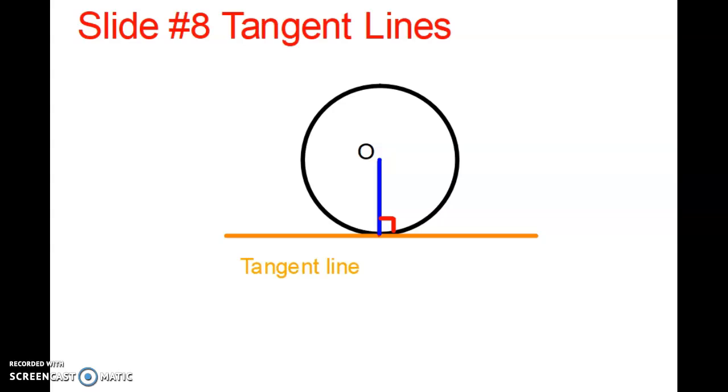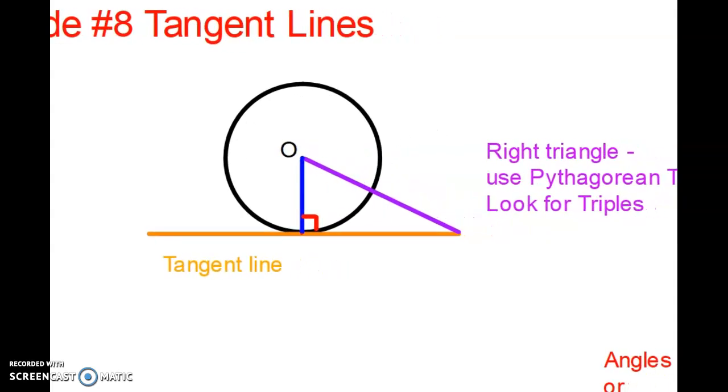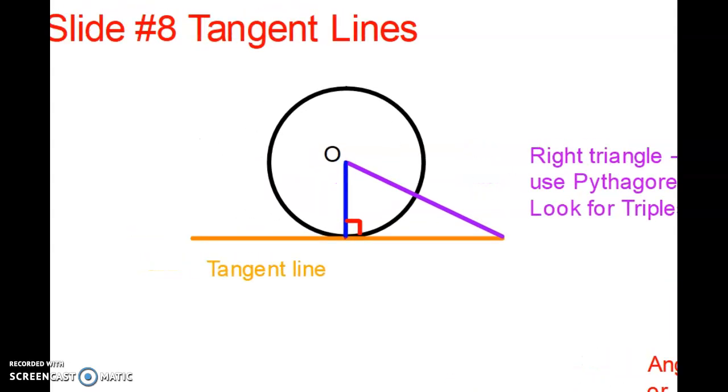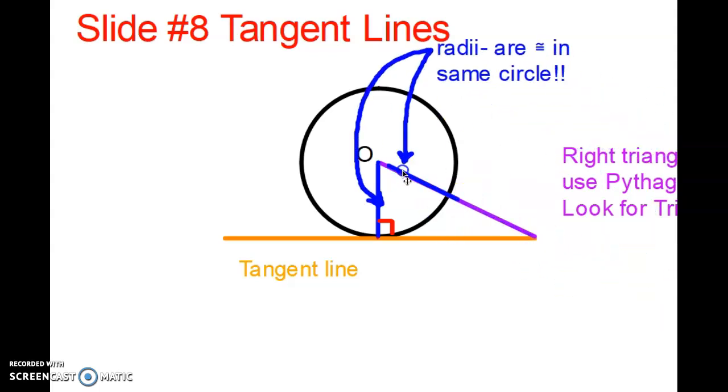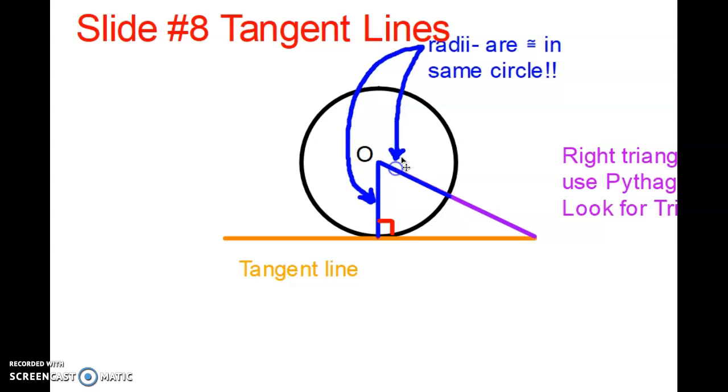So here's other things that you need to look out for. When I connect this, we have a right triangle and I'll move this over so that you can see it. We have a right triangle. You want to use the Pythagorean theorem and also look for triples. And another thing is we have radii and all radii are congruent that are in the same circle.